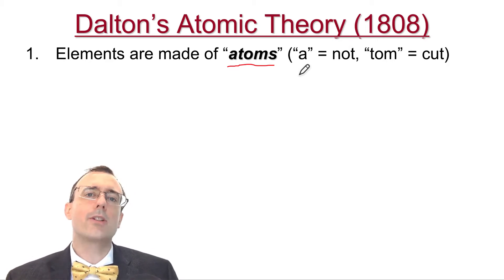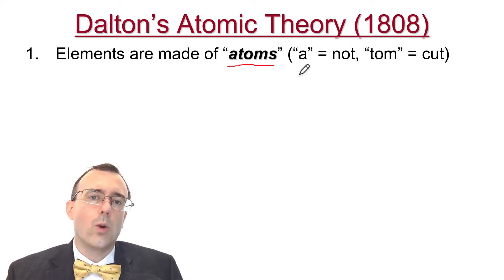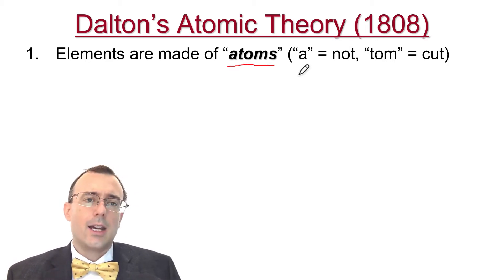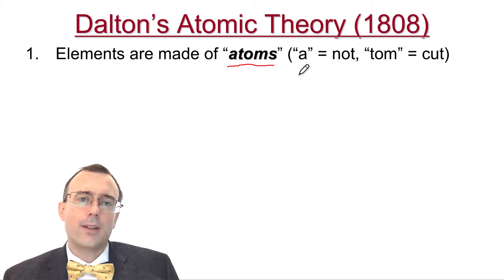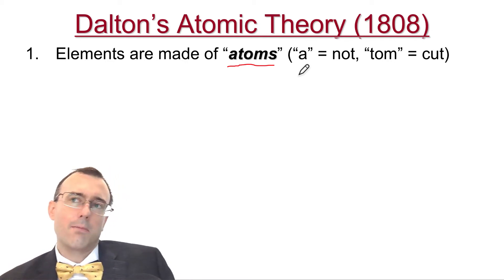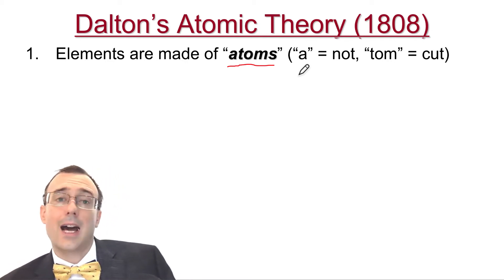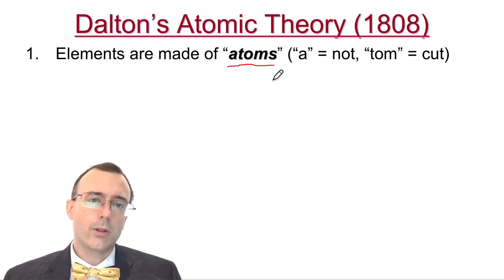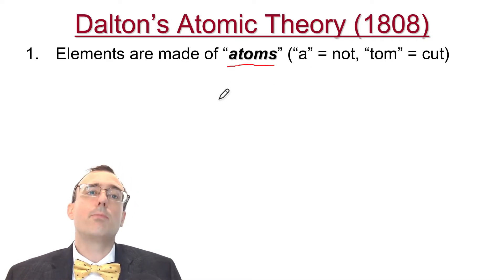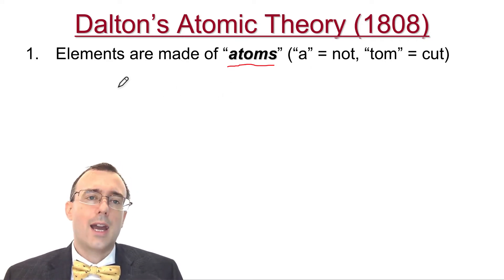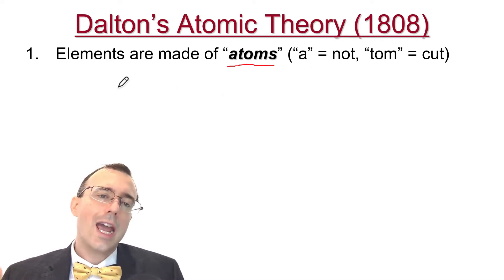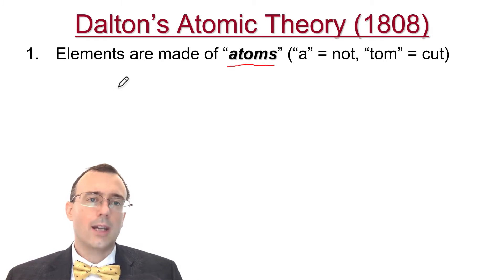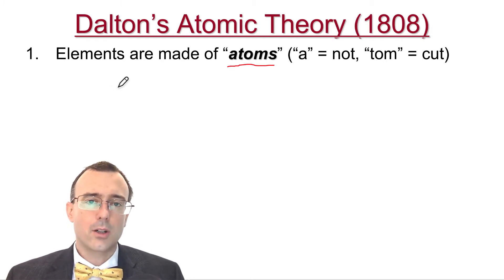That was the original idea of what an atom is. The Greek philosophers were arguing whether matter is made of atoms or elements. John Dalton said it's both — he changed the idea of what elements were. He said elements are made of atoms.